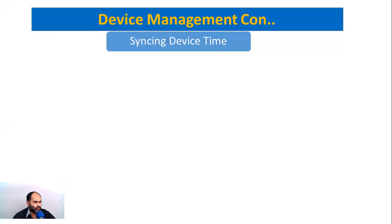Sometimes we have a biometric machine — whatever model you are using, whether it is a ZKT or any other vendor — the biometric machine is sometimes given with a battery backup. If there is no battery backup, you have to arrange a battery or power backup for your device so that your device is always powered on.